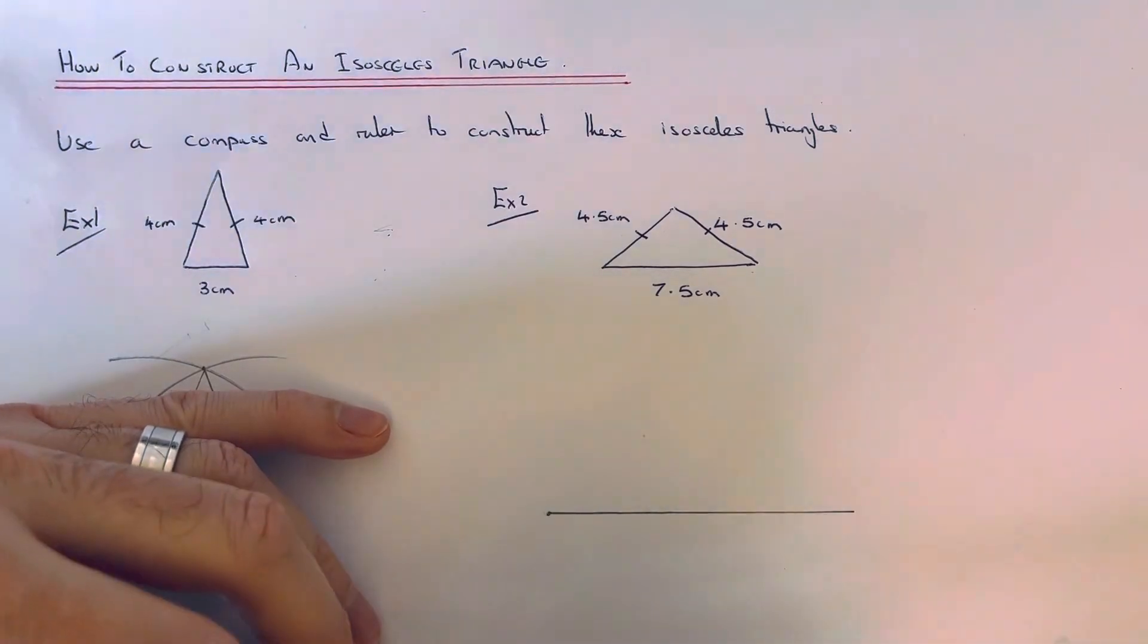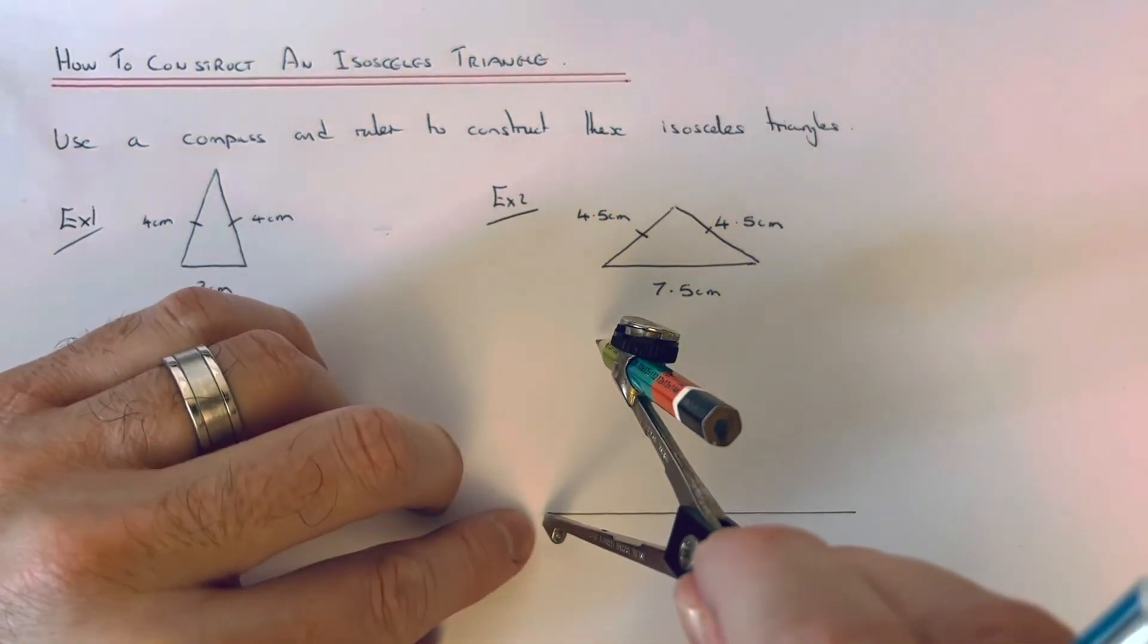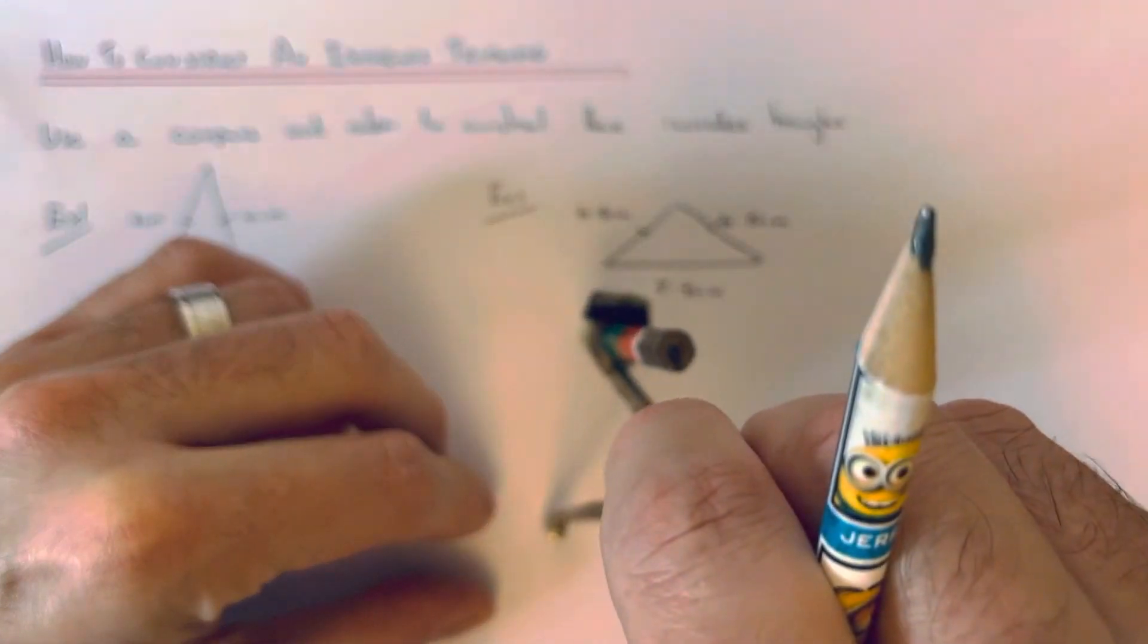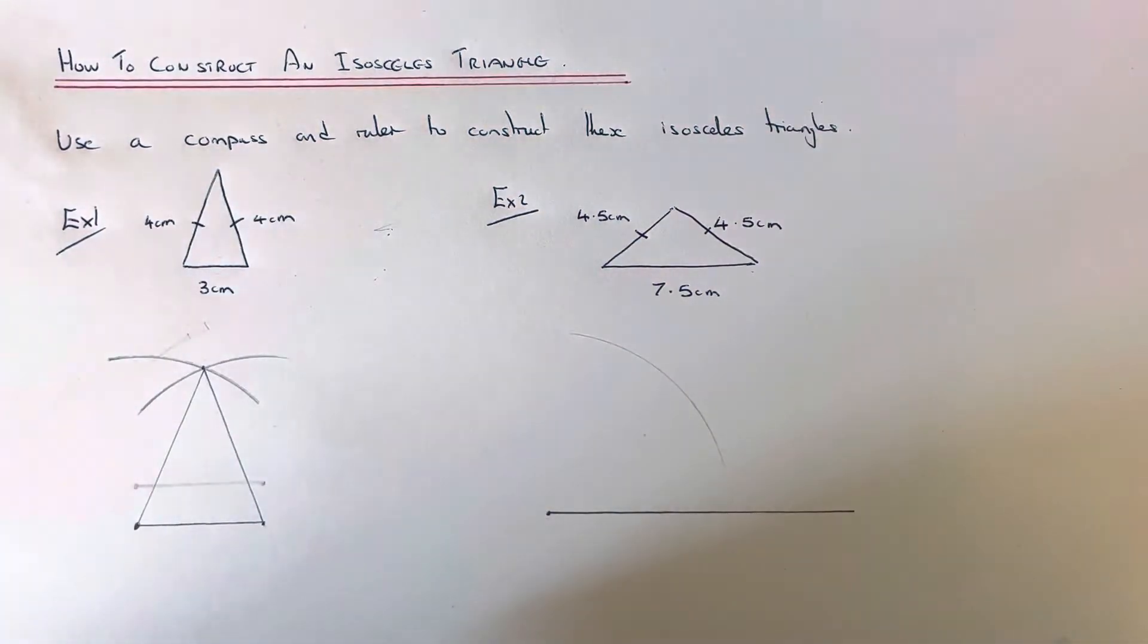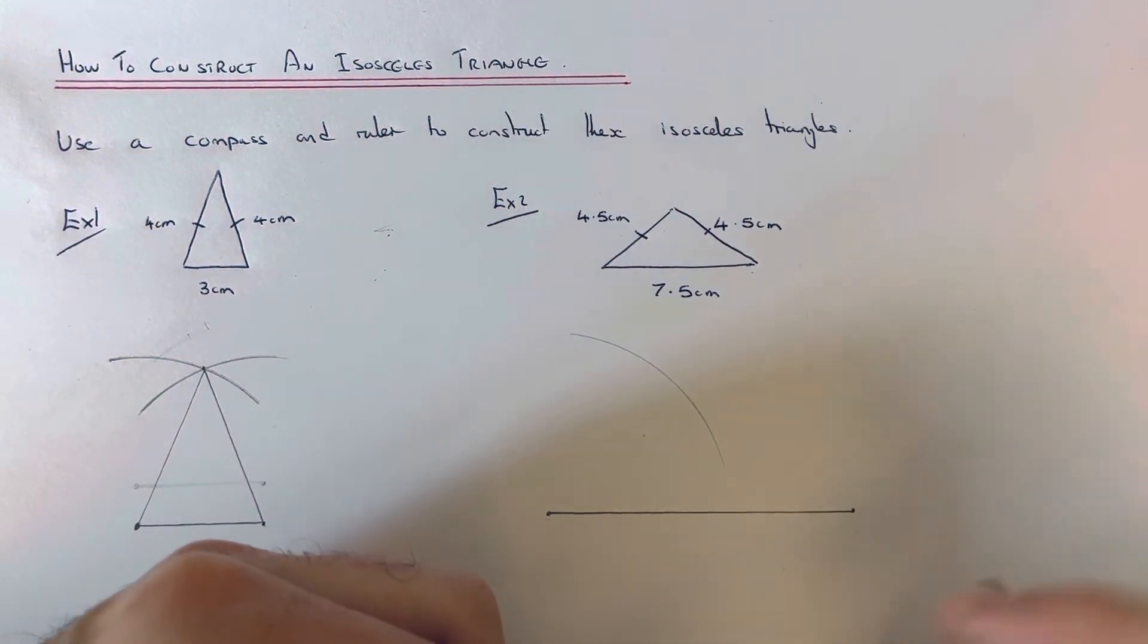Above our bottom edge, do the first arc from the left side and the same again from the right side of the line.